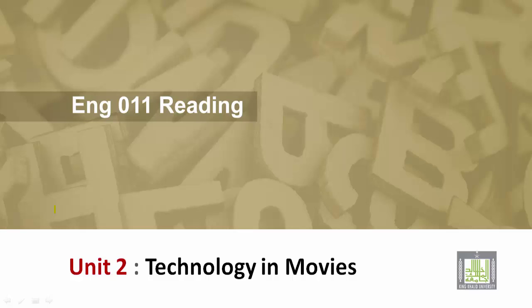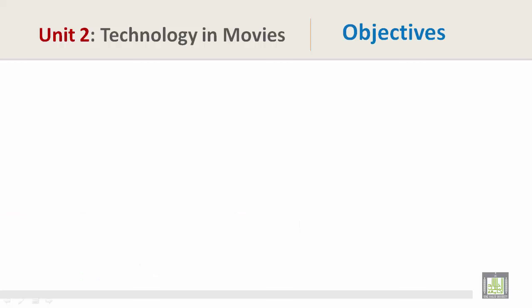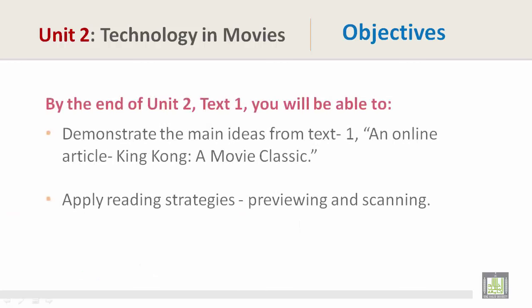English 011 Reading, Unit 2: Technology in Movies. Objectives: By the end of Unit 2 Text 1, you will be able to demonstrate the main ideas from Text 1, an online article, King Kong: a Movie Classic, and apply reading strategies — previewing and scanning.